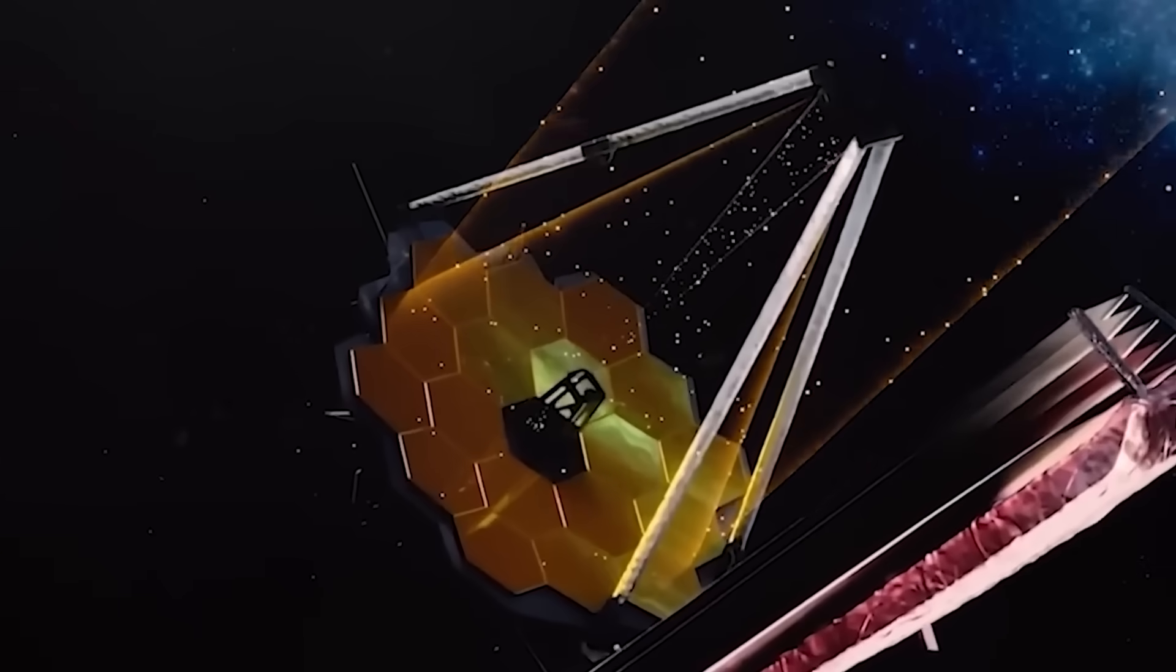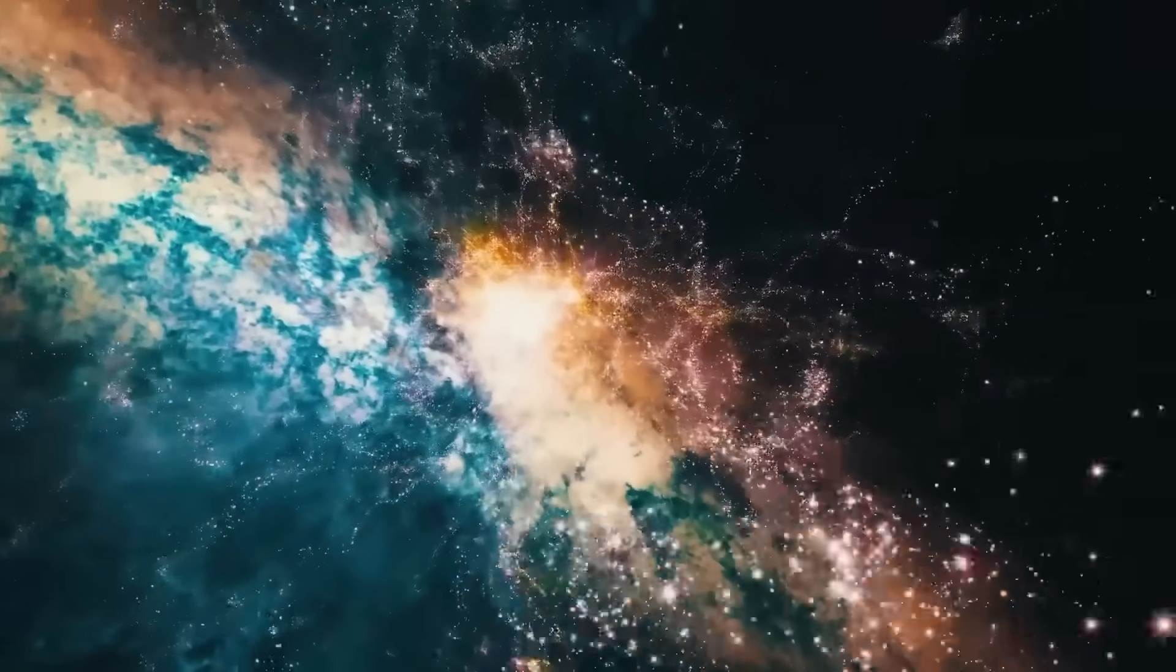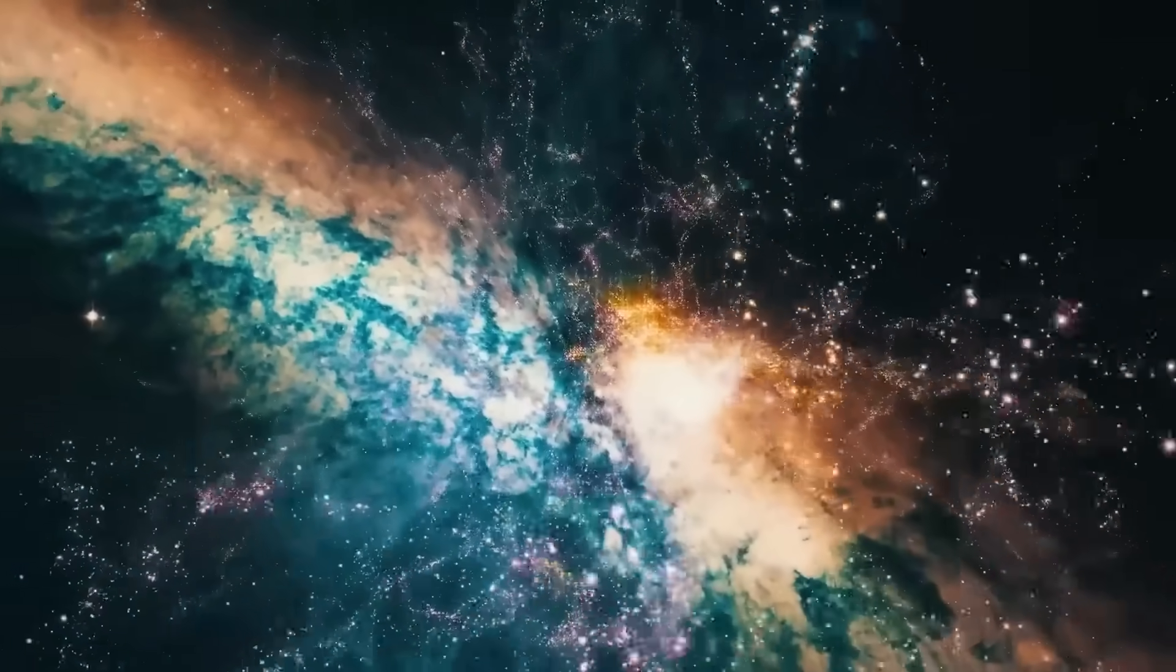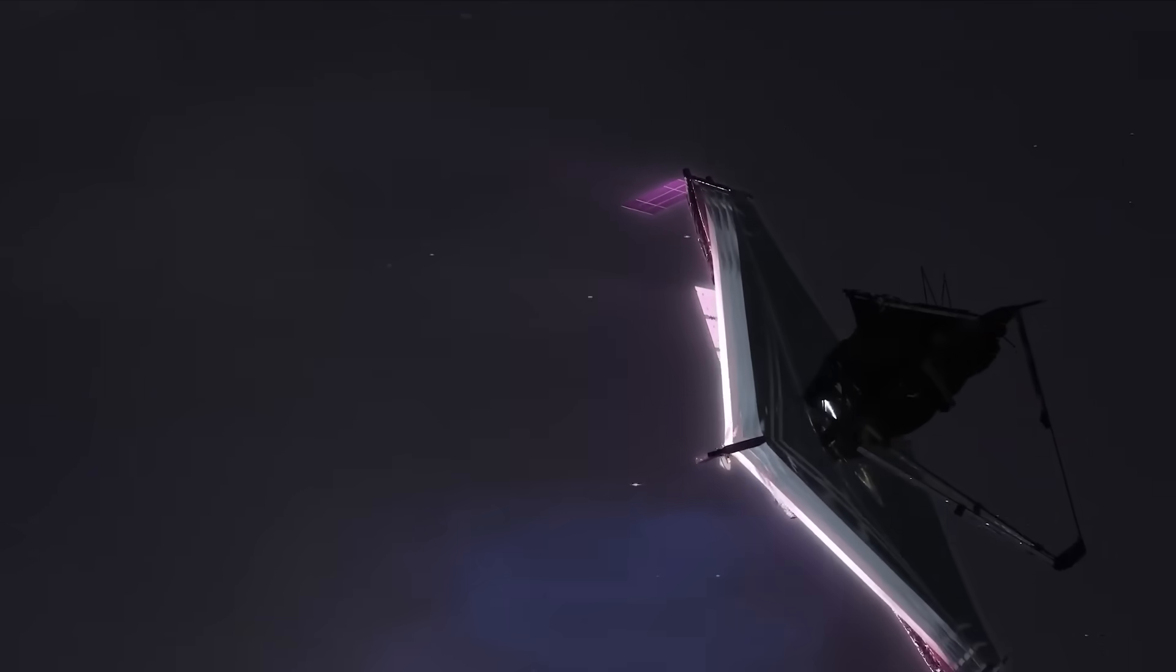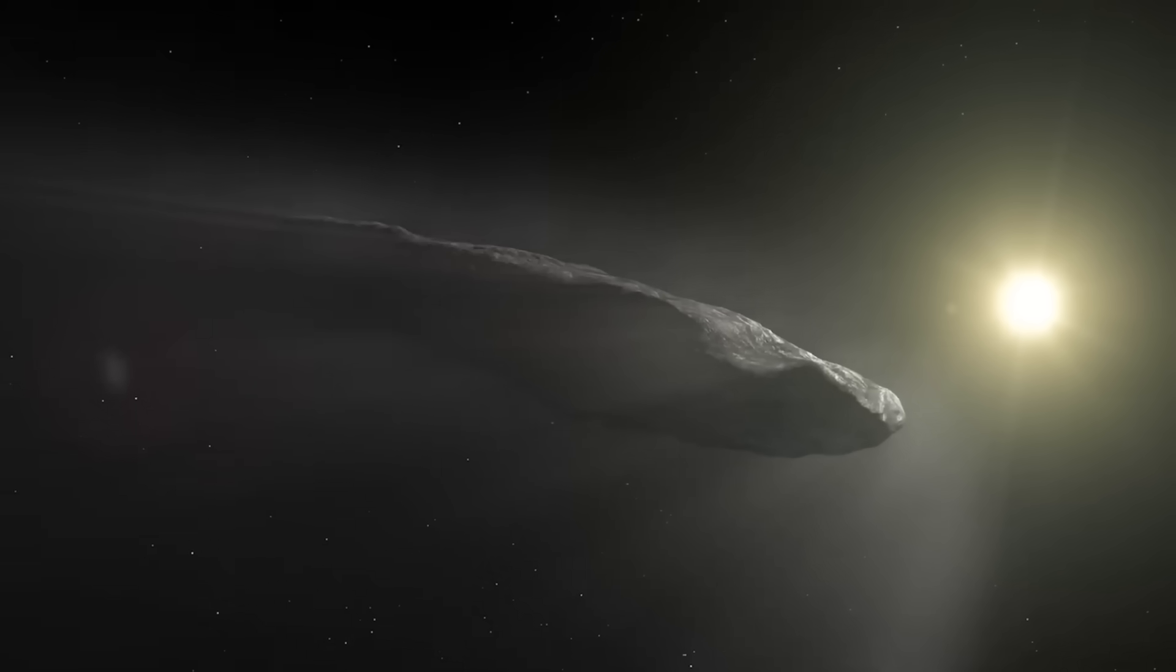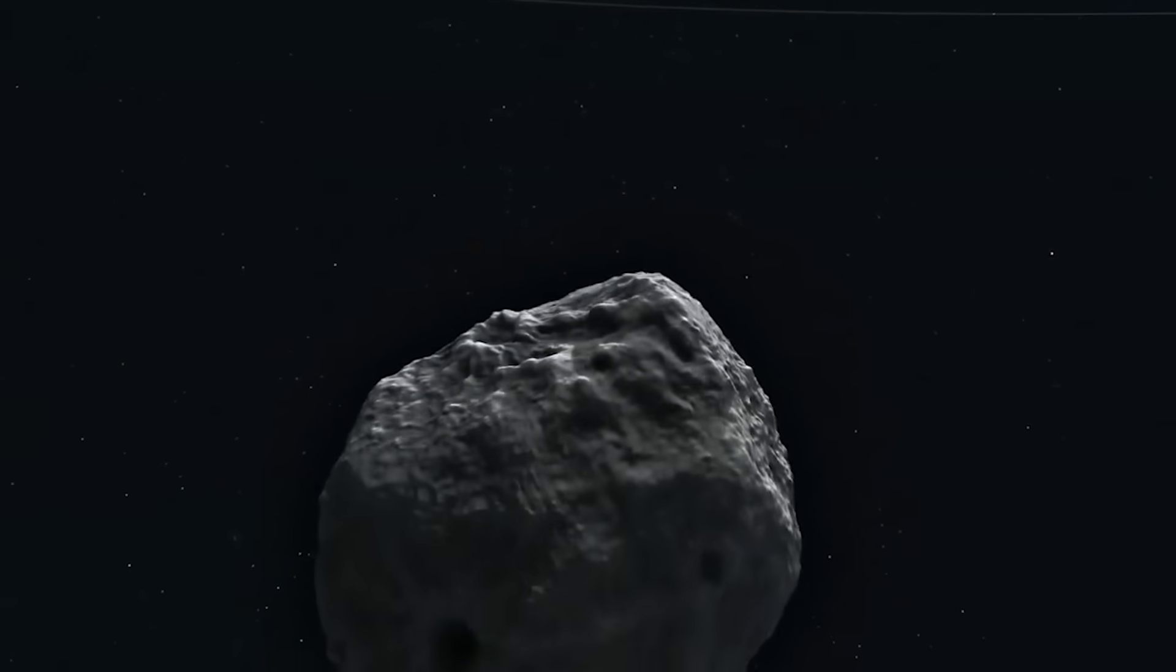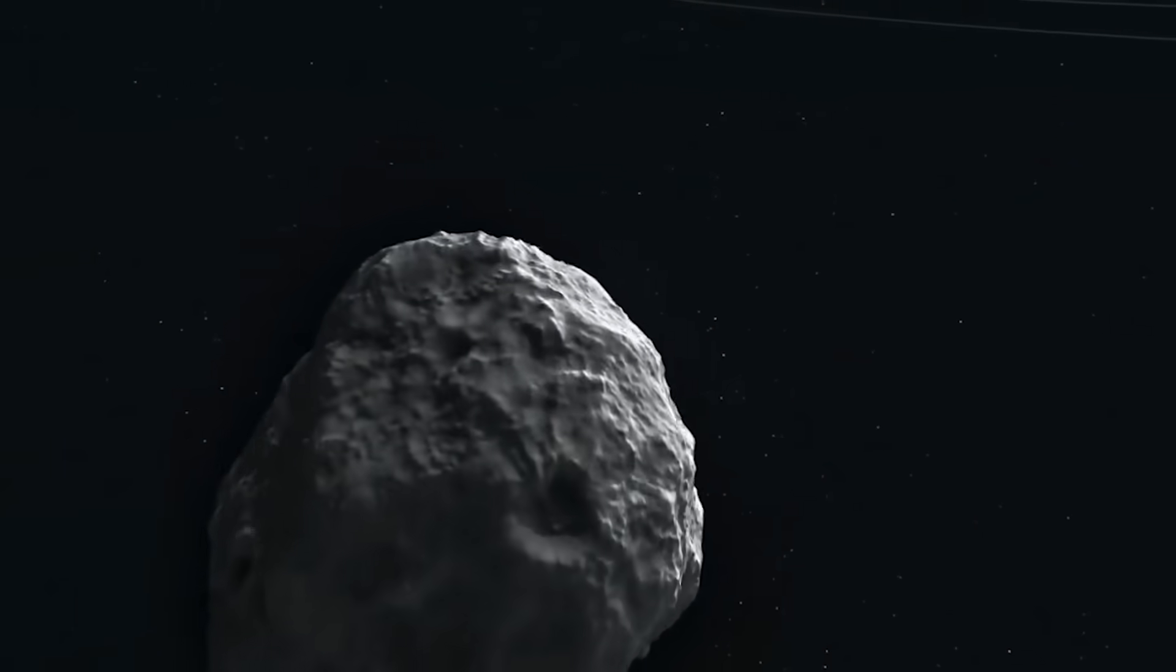When the James Webb Telescope locked onto 3I Atlas, scientists expected to see the familiar jagged irregularities of an icy rock. But Webb's powerful instruments revealed something that shattered those expectations. The surface of the object reflected light like polished metal, shimmering with an unnatural brightness that no cometary ice could produce. It was small, yes, but its reflectivity made it appear larger, as if designed to stand out rather than hide.